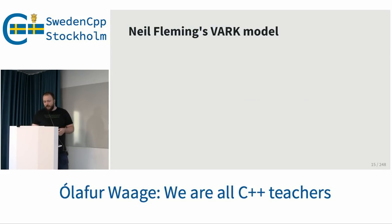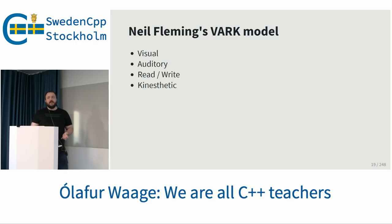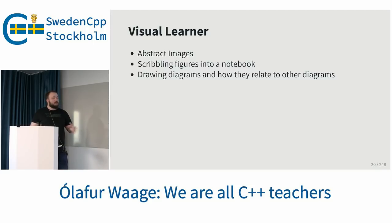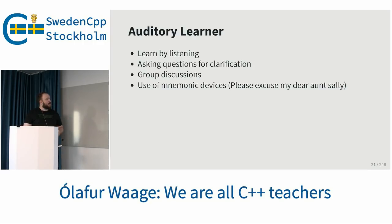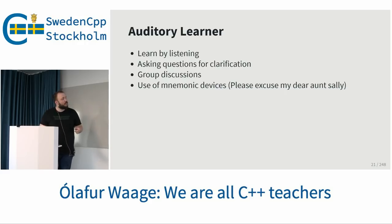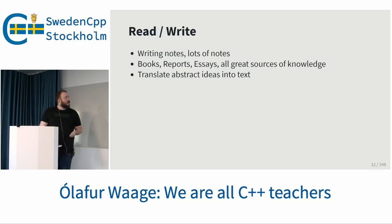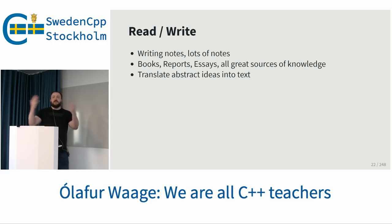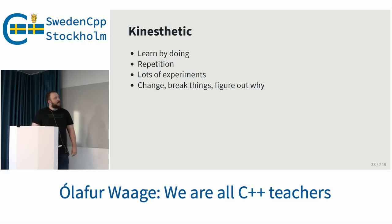There's one model which kind of works — it's called the VARC model: visual learner, auditory learner, read and write, and kinesthetic. A visual learner likes abstract images, scribbling things into a notebook, drawing diagrams. An auditory learner learns by listening, asking questions for clarification, group discussions, use of mnemonic devices — 'Please excuse my dear Aunt Sally' for those who remember that one. The read and write learner takes lots of notes, reads books and papers, translates abstract ideas into text. And then you have kinesthetic — learn by doing, repetition, lots of experiments. Break things, figure out why. I do a lot of the last one.